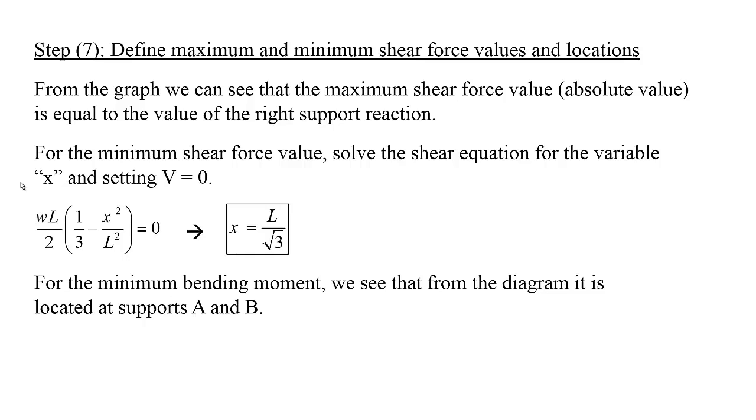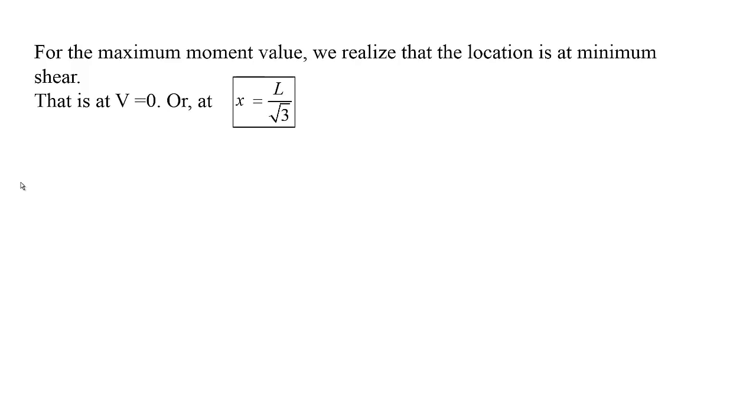As for the bending moment, we've seen that the minimums are located at the supports, which have the value of zero. But what about the maximum? The maximum moment takes place when the shear is zero. The shear is zero at X equals L over square root of 3. If I take this value and substitute it back into the moment equation this time, I'll get a value for the maximum moment. That's M max equals M of L over square root of 3.